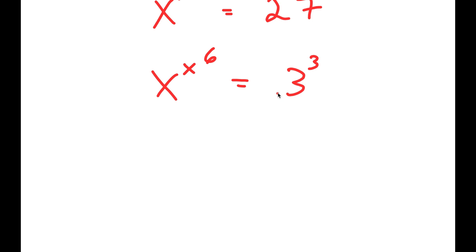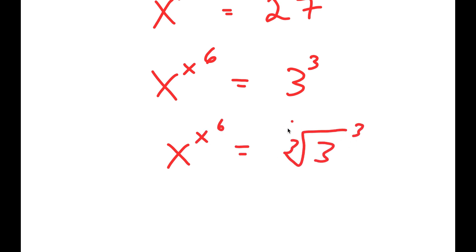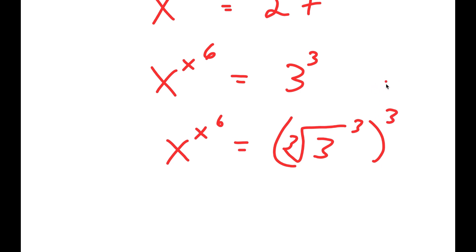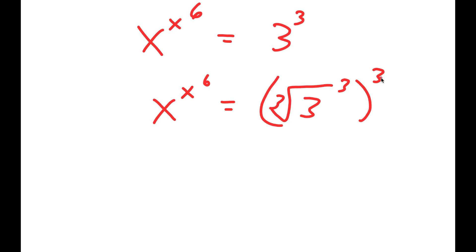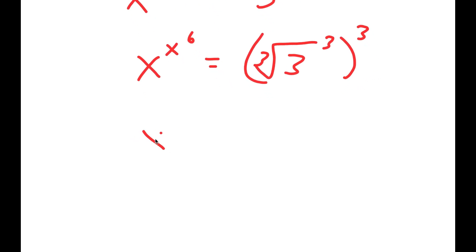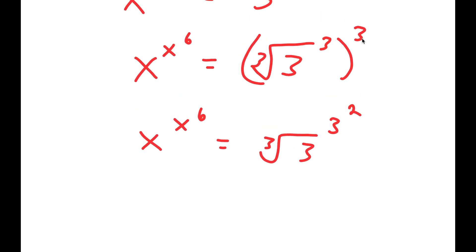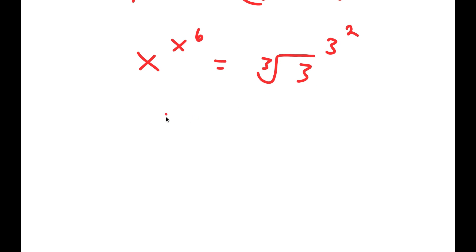From here, this is the same thing as x to the power of x to the power of 6 is equal to the cube root of 3 to the power of 3 to the power of 3, which is equal to the cube root of 3 to the power of 3 squared. Because 3 times 3 is 9, and 9 is the same thing as 3 squared.